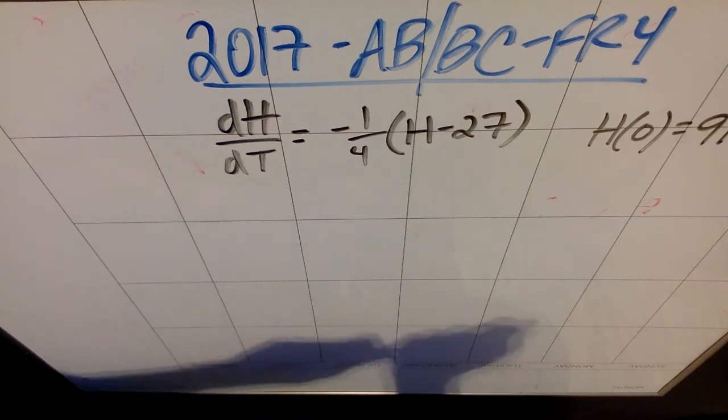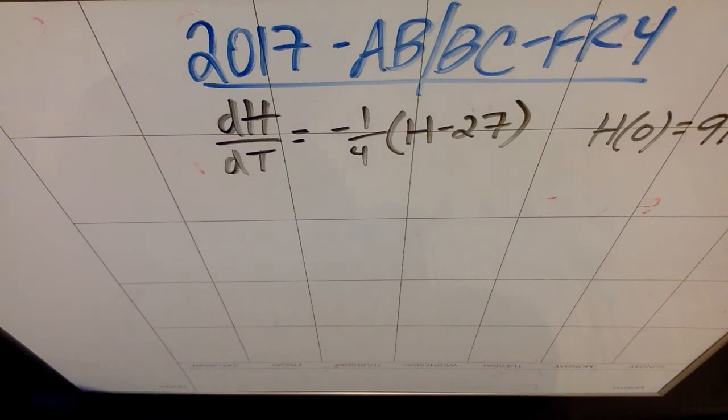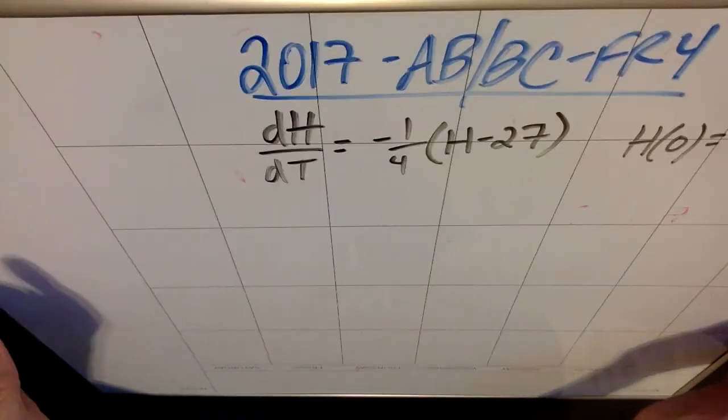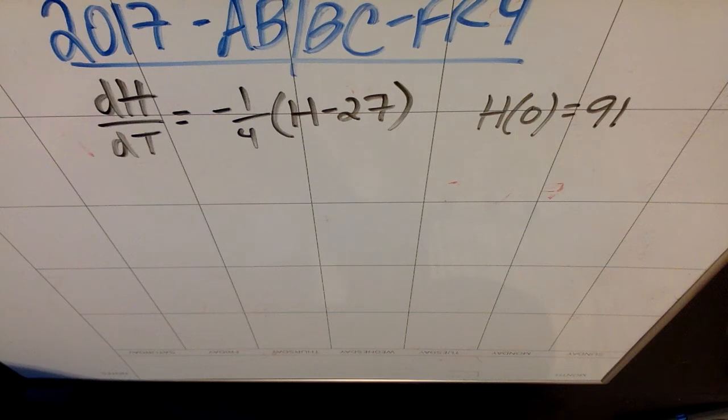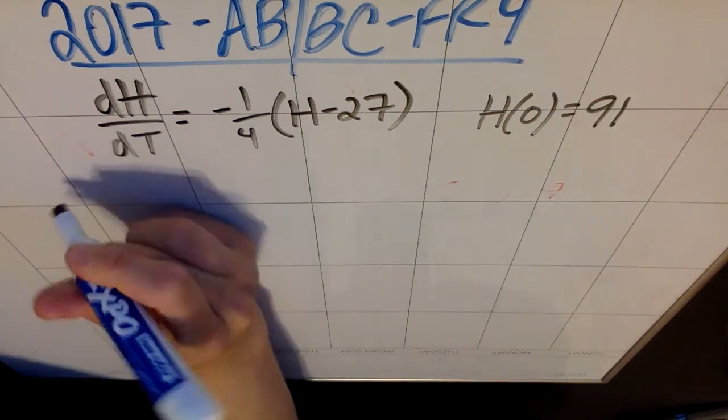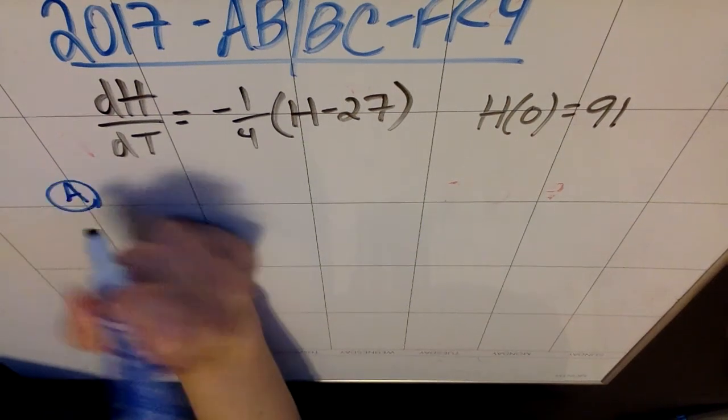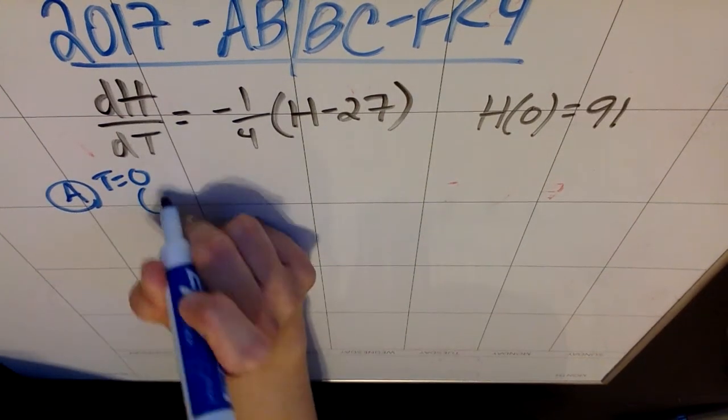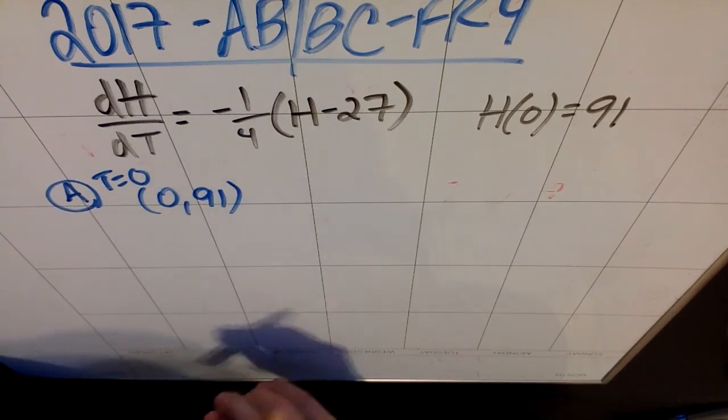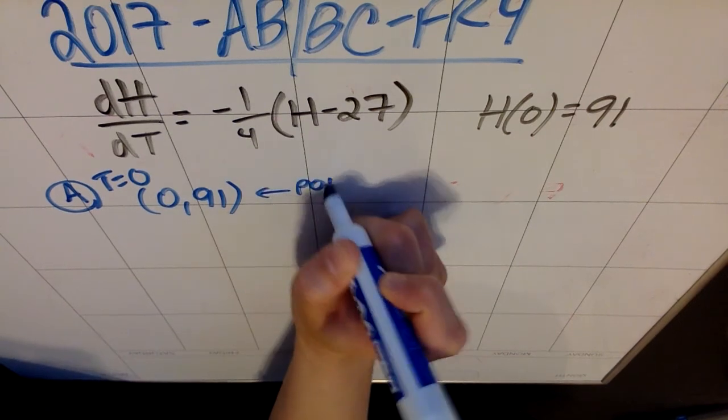Part A: write an equation for the line tangent to the graph of H at T equals 0. Use this equation to approximate the internal temperature of the potato at time T equals 3. Before we get too stressed about this, anytime you're asked for an equation of a line, you need two things: a point and a slope. What I know in part A, at the moment when T equals 0, is that the point is (0, 91). T is 0, H is 91. So there's my point.